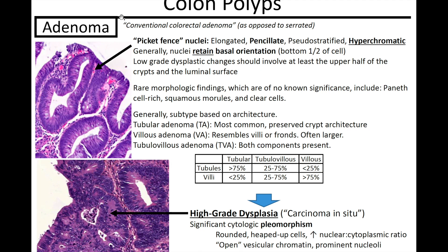First up we have adenomas. As opposed to a serrated polyp, you can have a conventional colorectal adenoma, which by definition is low-grade dysplasia. In a tubular adenoma, you're going to have picket fence nuclei that are elongated and pencil-like, pseudo-stratified, hyperchromatic. Just at low power, if you throw the slide up and you see a darker section or a very blue region, that's a clue. You want to go in at high power and assess the nuclei — you could be dealing with a tubular adenoma.